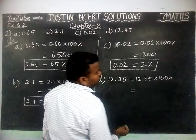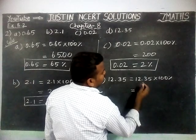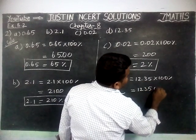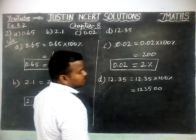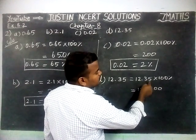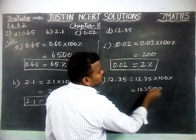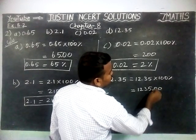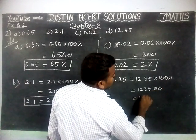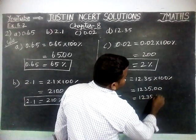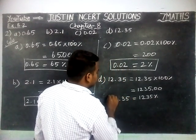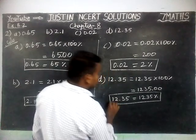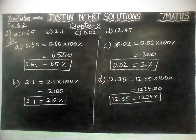Part D: 12.35 is equal to 12.35 into 100%. Now we have 2 decimal places in 12.35. When we multiply, we add 2 zeros in the last places. Then from the right hand side, 1, 2 — we place the decimal point. So the percentage is 1235%. Therefore, 12.35 is equal to 1235%.